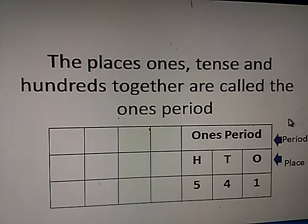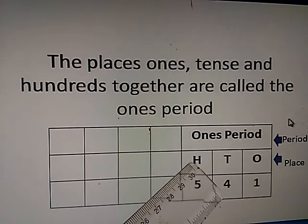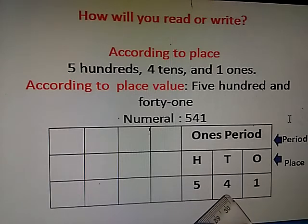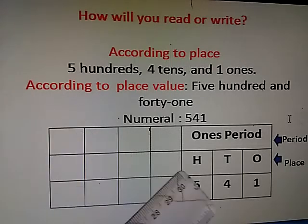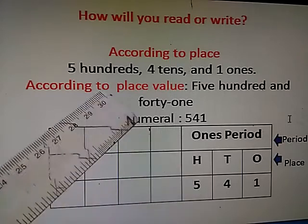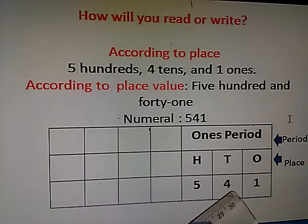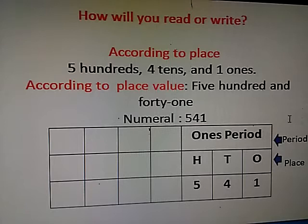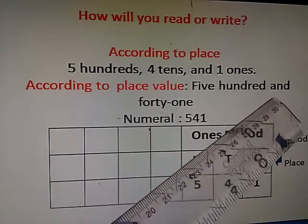How will you write this? For example, in the ones place there is 1, in the tens place is 4, and in the hundreds place is 5. How will you read or write? We write according to place value: in the hundreds place is 5, so we write five hundreds. In the tens place there is 4, so we write four tens. In the ones place is 1, so we write one ones. According to place value, we will write five hundred and forty-one.